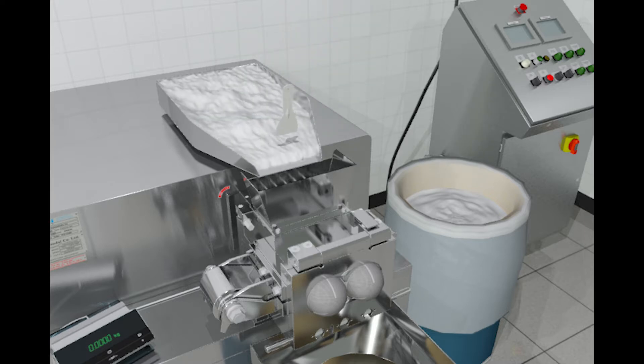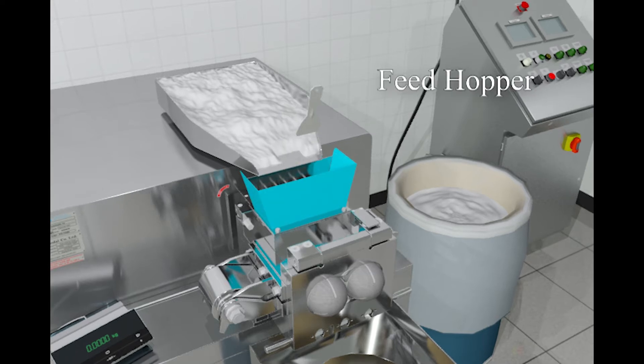The wet mix, which is typically prepared in a high shear granulator, is fed into the feed hopper by the operator.